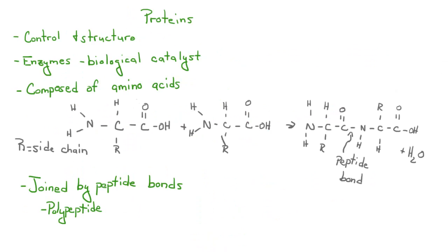Next, we have proteins, which are involved in control and structure. Most proteins are going to be enzymes, or biological catalysts. Proteins are composed of what are called amino acids. You can see here, you have your amino group right here and then a carboxylic acid group right here. The R is what is called a side chain. Amino acids come together to form what are called polypeptides, and amino acids are joined by what is called a peptide bond.